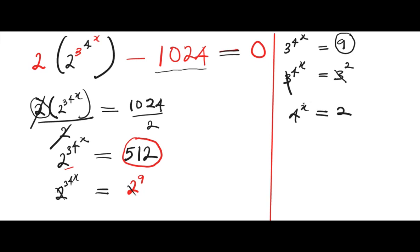Now we are left with four raised to the power of x equals two. We can express four raised to the power of x in terms of two, so we're gonna have two raised to the power of two, raised to the power of x, equals two.